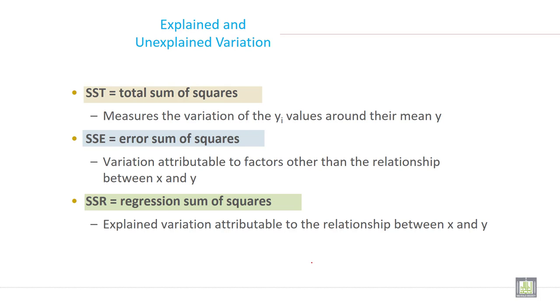SST, total sum of square, measures the variation of y values around their mean y. SSE, error sum of square, is variation attributable to factors other than the relationship between x and y.